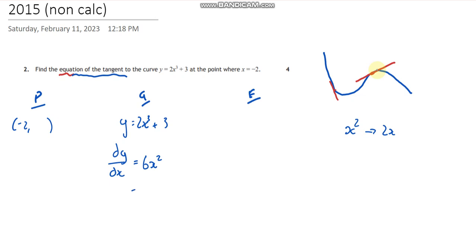So to work out my gradient, I'm going to substitute in my negative 2. So negative 2 squared is 4, 4 times 6 is going to give me a 24. So I know my gradient, that's fantastic. I almost know a point, don't quite know y though.